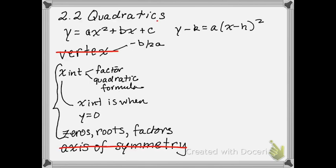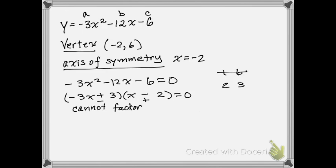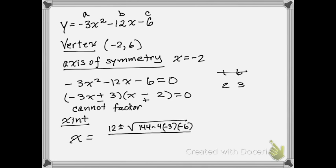Since we can't factor, that brings us to the quadratic formula. We're looking for the x-intercept, so x equals negative b, plus or minus the square root of b squared minus 4ac. In a pre-calculus class you've likely been working with complex numbers. After simplifying, we get x equals negative 2 plus or minus radical 2.